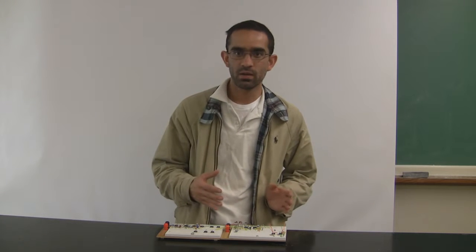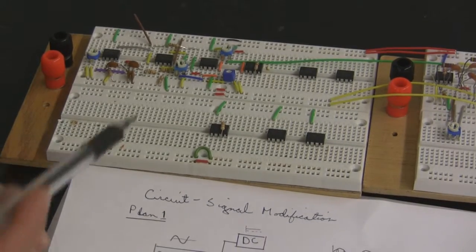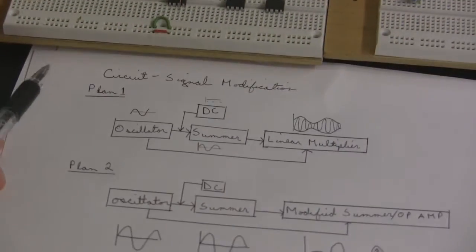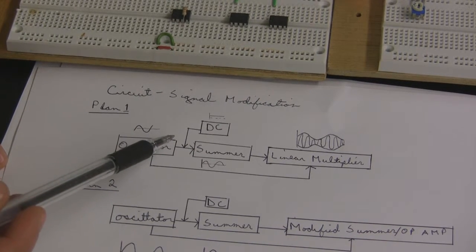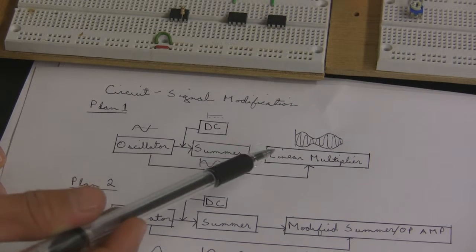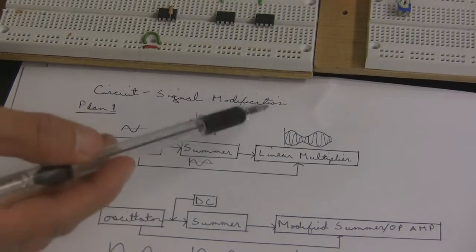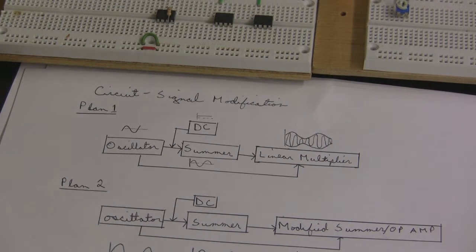In Project 3, we had attempted a new circuit. The purpose of this was to transfer information wirelessly from the array to the computer. It was a signal modification circuit. We had two plans. Originally, the plan was to build an oscillator and then bring in a DC current and add it to a summer and then process it through a linear multiplier. You would essentially get a wave that looked like this. Unfortunately, we couldn't afford a linear multiplier.